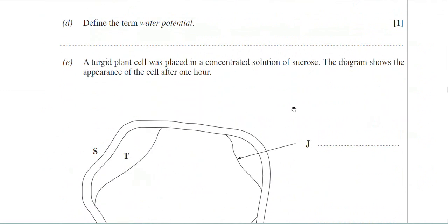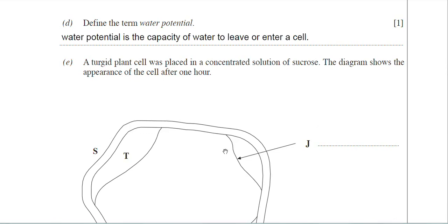Part D asks us to define water potential. Water potential is simply the capacity of water to leave or enter a cell — it is a measure of the ability of water to leave or indeed enter a system such as a cell.